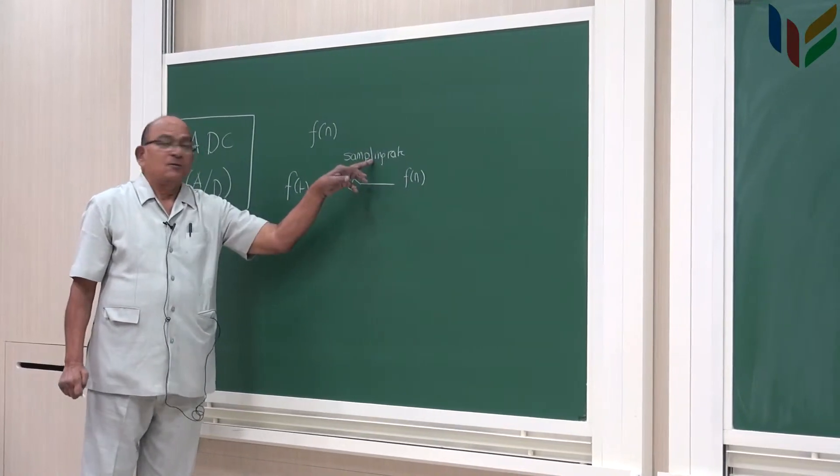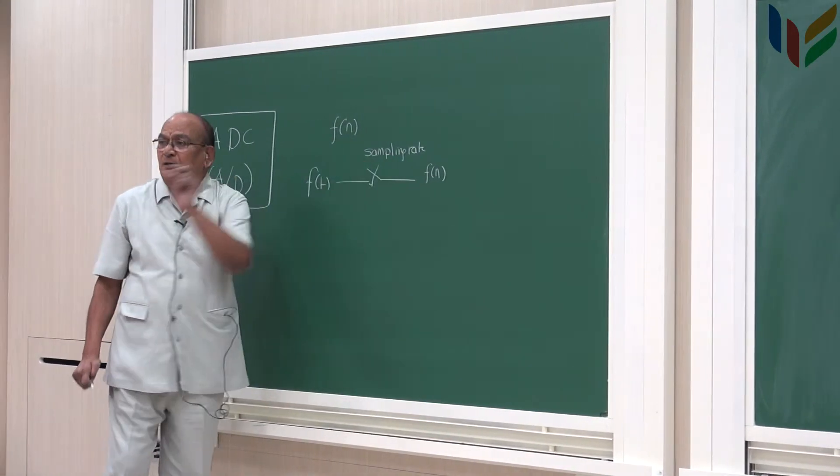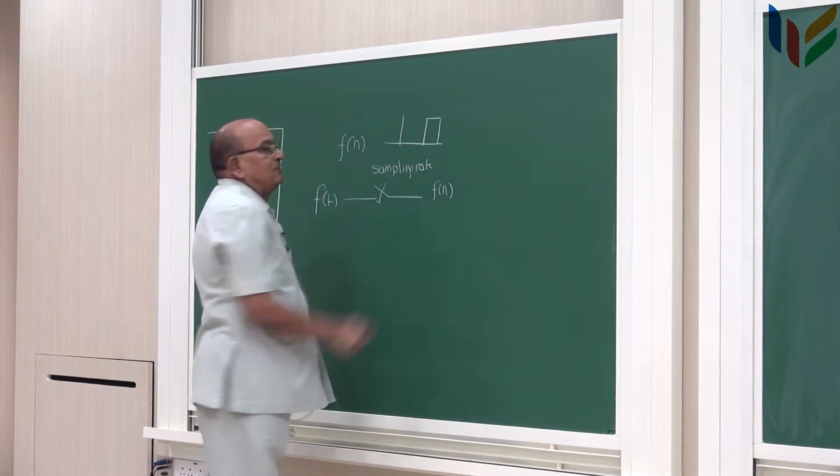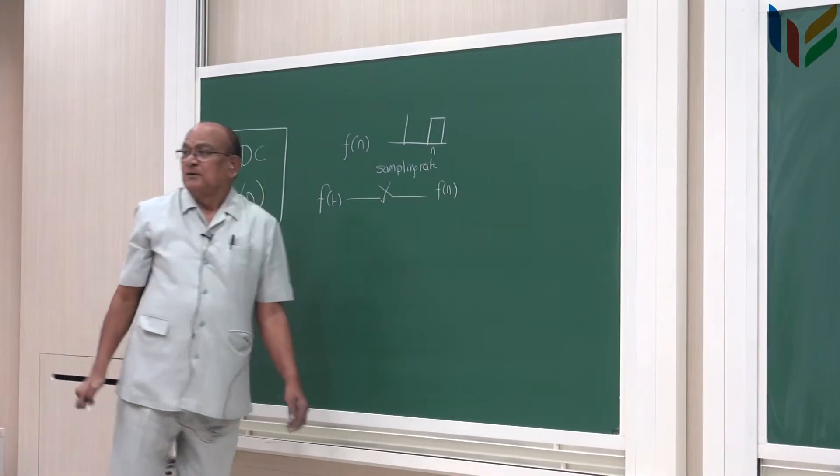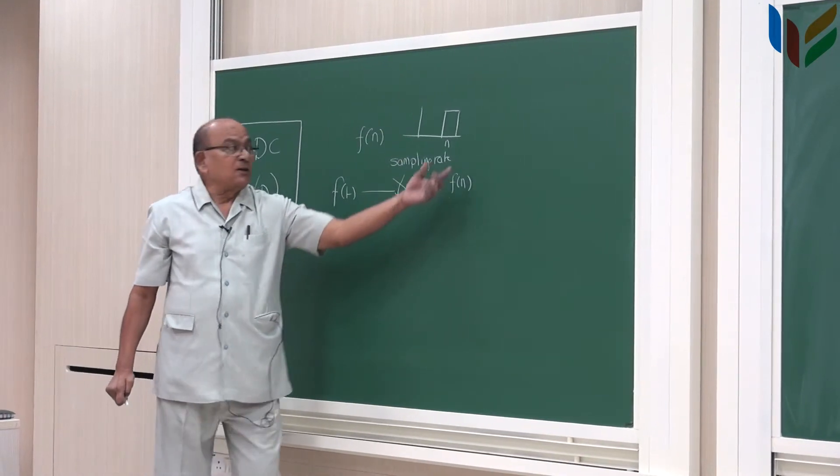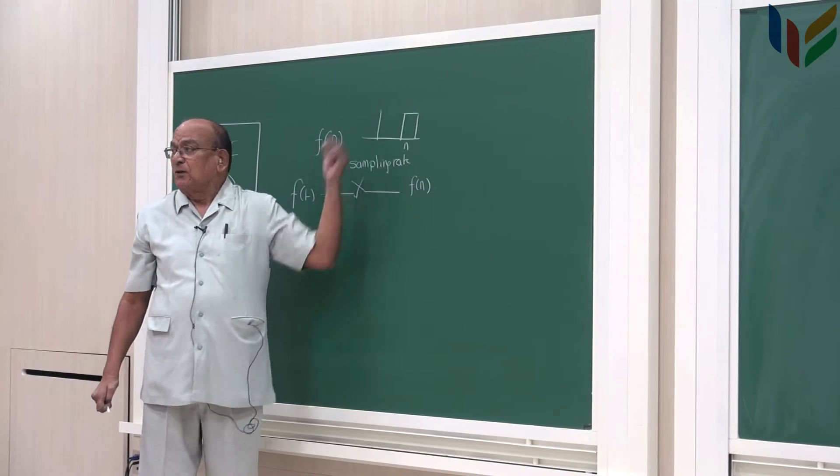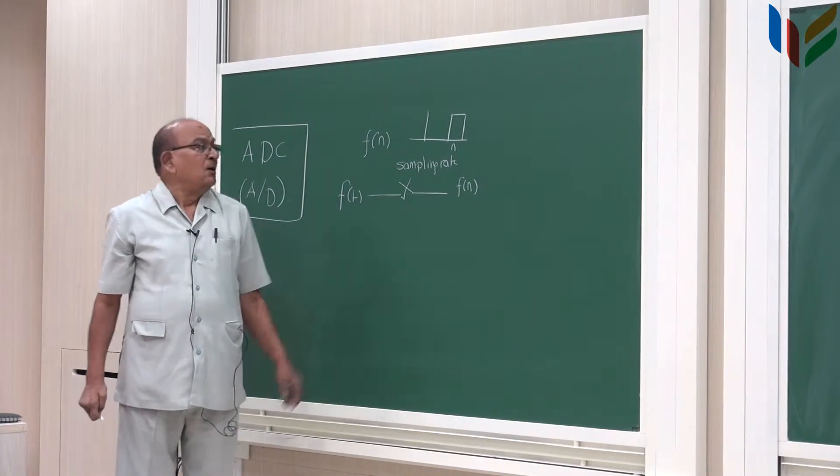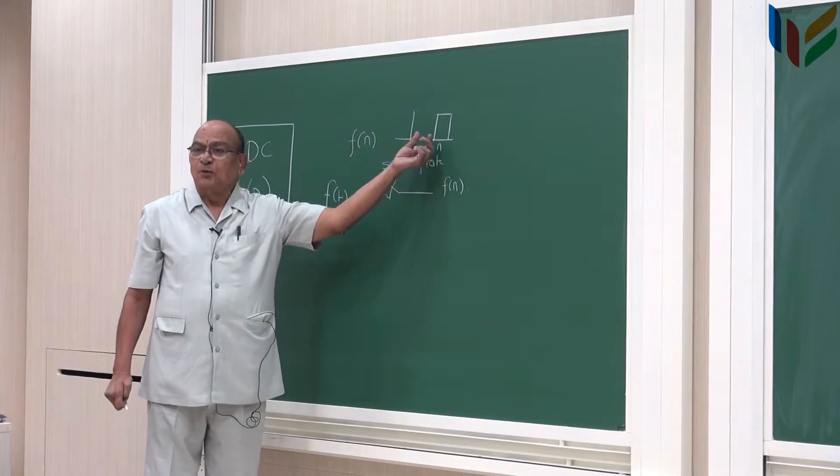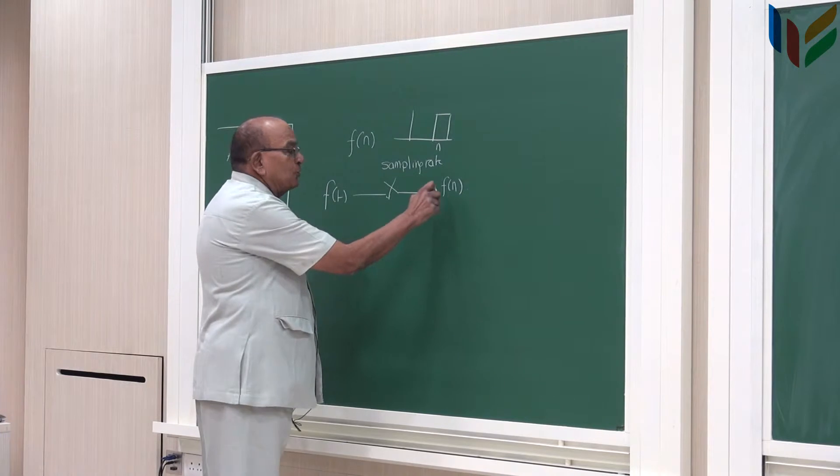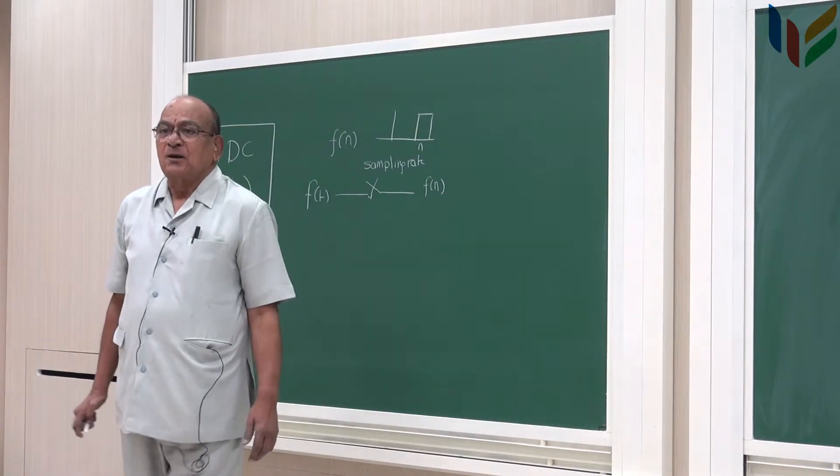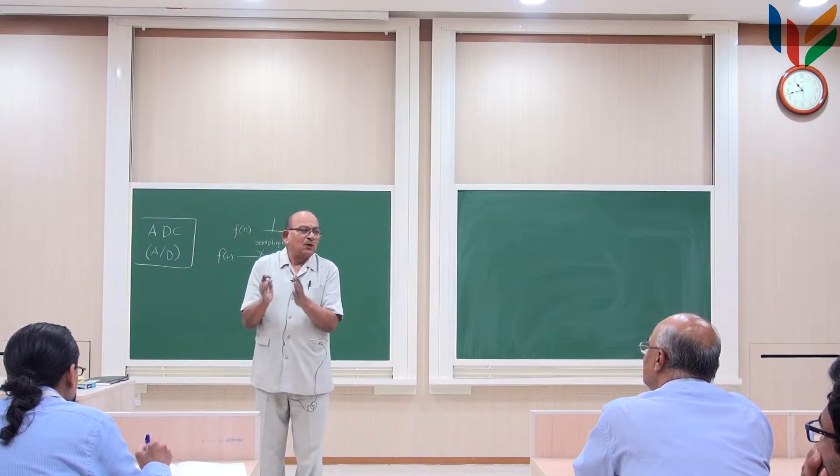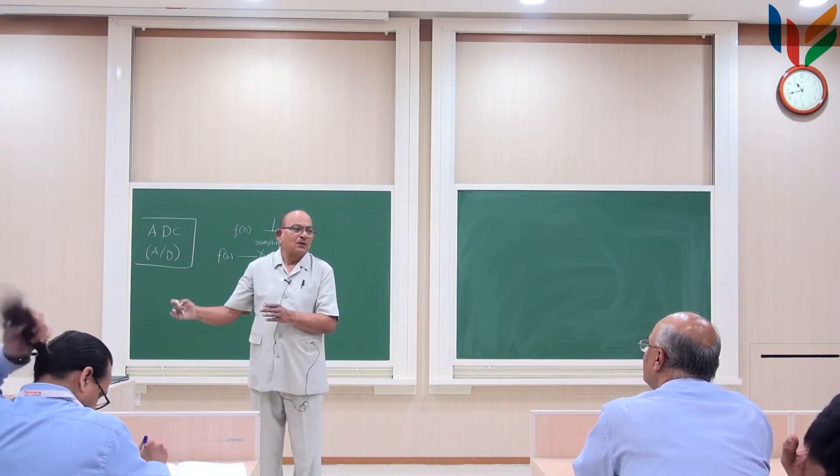This n corresponds to the particular time duration where this sampling interval is corresponding to the sampling signal at n. This is the window corresponding to this f of n. Next sampling pulse will give you n plus 1, previous one will give you n minus 1. The switch is closed for the duration of this sampling interval. This has to be stored somewhere. This analog number has to be stored because we need to convert this into a digital number.